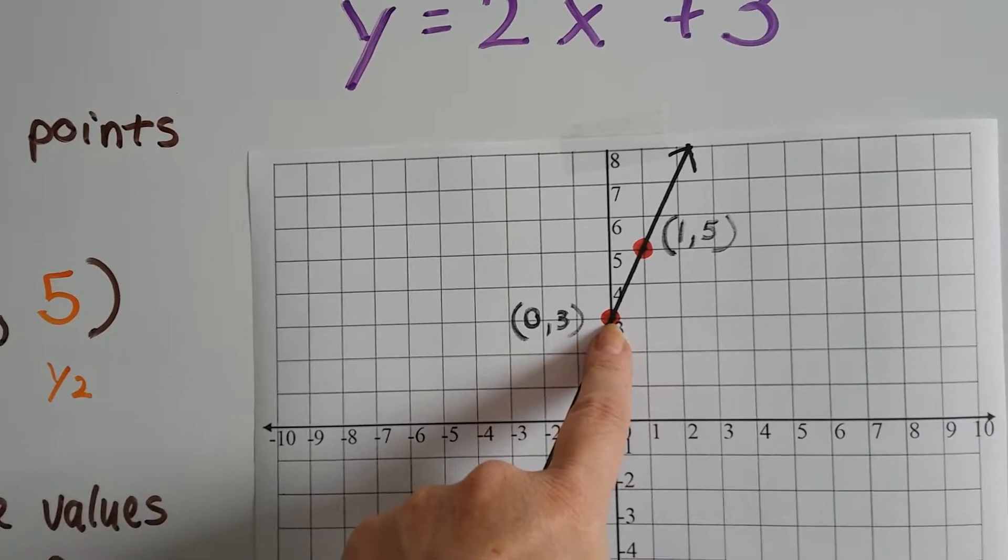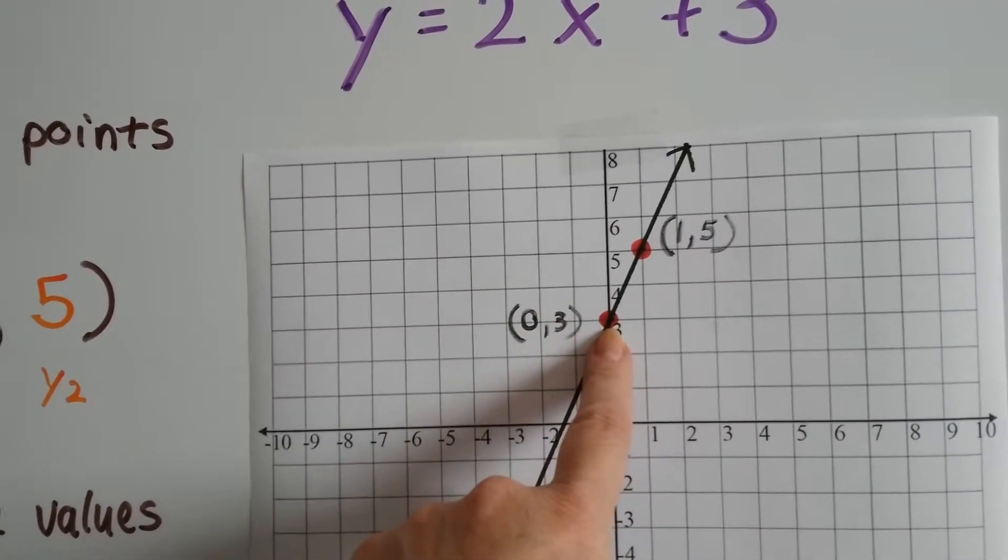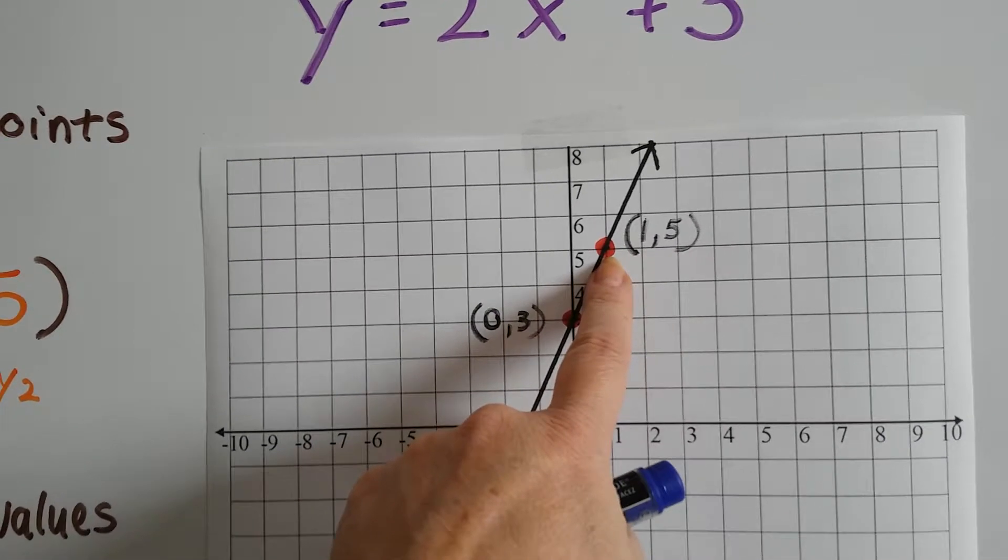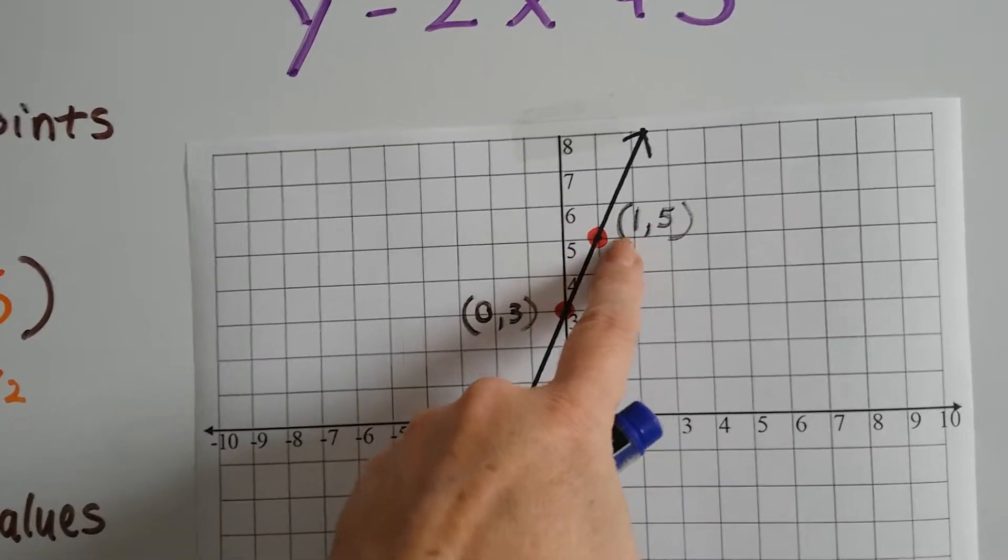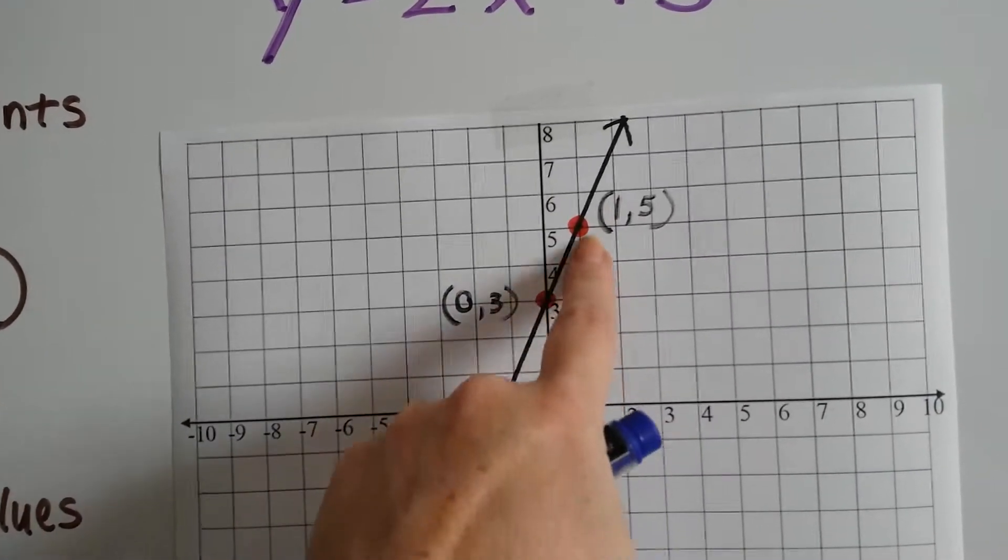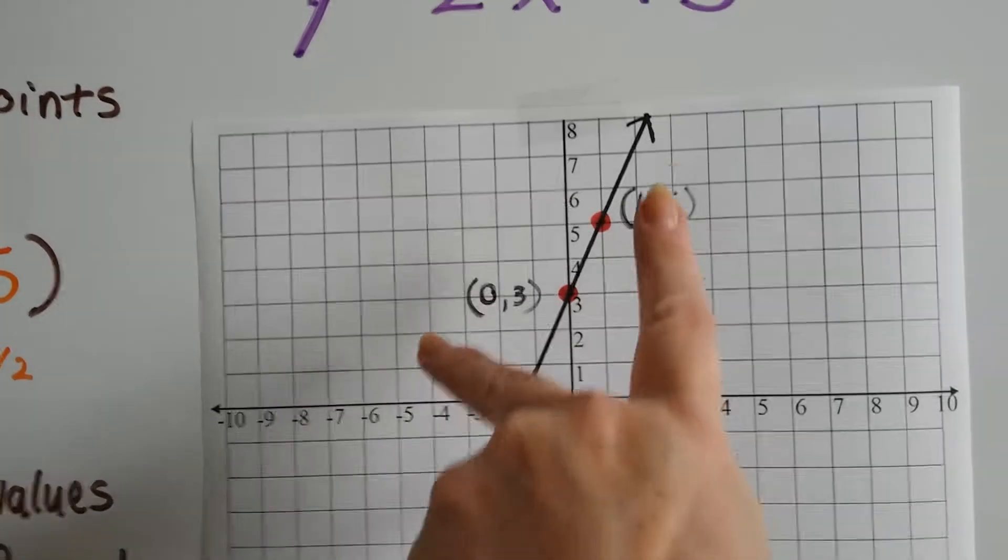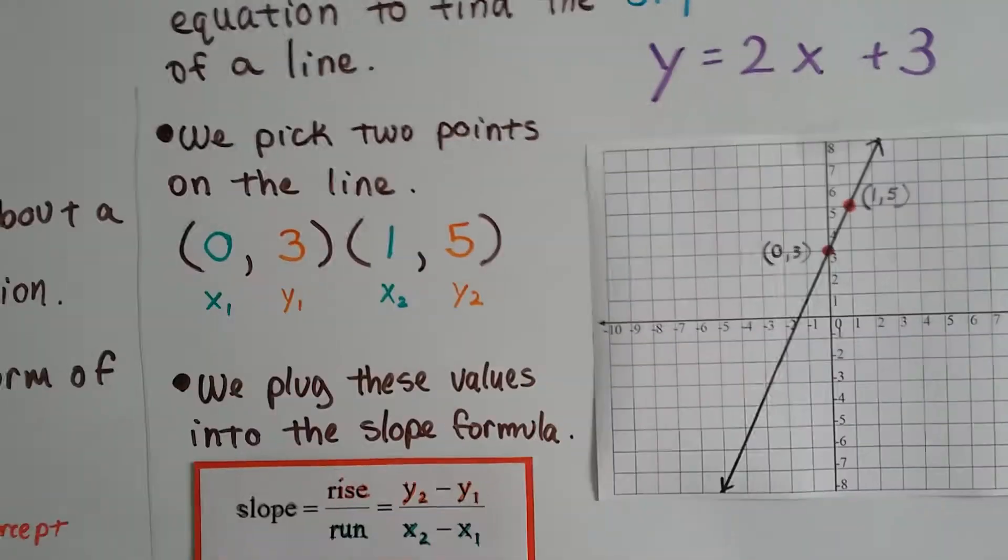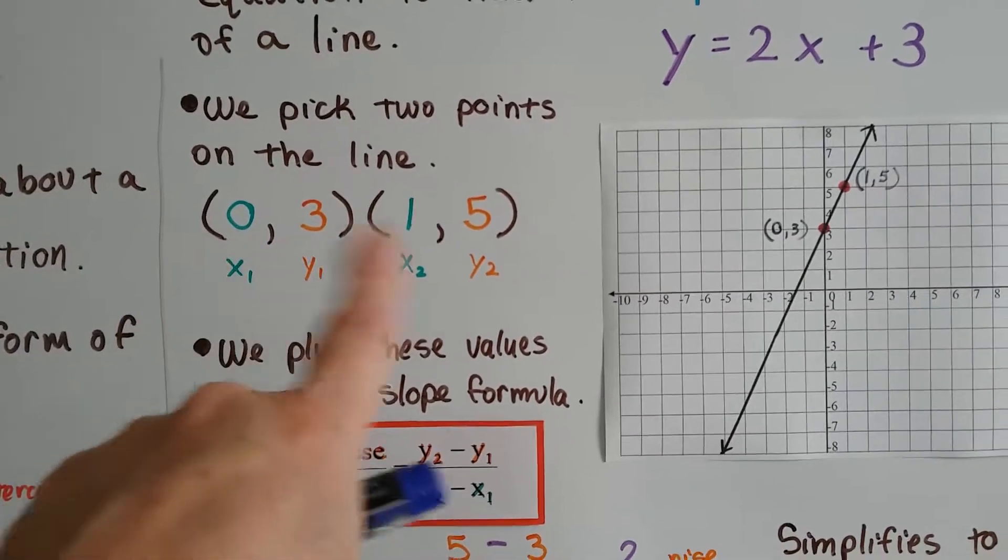Well, it's hitting right here, and that's at 0 on the x and 3 on the y, and it's hitting right here perfectly on these cross lines, and that's a 1 for the x and a 5 for the y. So let's use these two points, and that'll be our x1, y1, and our x2, y2.